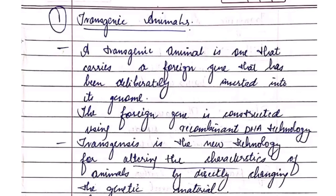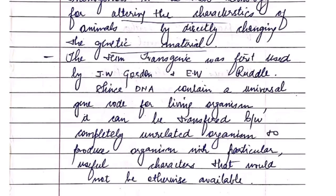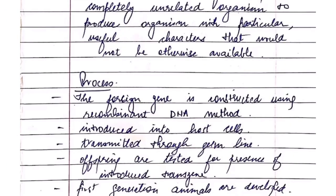The very first question which arises is: what does transgenic mean? A transgenic animal is one which has had a foreign gene deliberately introduced into it, constructed using recombinant DNA technology. We use transgenesis basically to alter the characteristics of animals and make them according to our need.